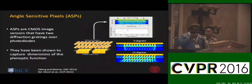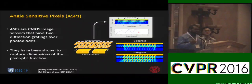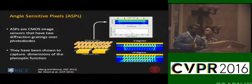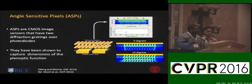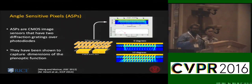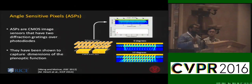So what are angle-sensitive pixels? Angle-sensitive pixels are CMOS photodiodes with two diffracted metal gratings on top of them, on the order of the wavelength of light. We leverage the wave properties of light here. As light hits the first grating, it causes an interference pattern known as the Talbot effect. The second grating selectively filters that pattern to the photodiode, giving a characteristic sinusoidal modulation of intensity to angle.